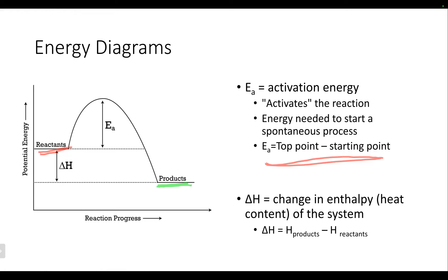Delta H — the change in enthalpy, the change in the heat content of the system — is going to be the enthalpy of the products minus the enthalpy of the reactants. So just that change in energy between where we finished the reaction and where we started it. With the reverse reaction, we would just have to switch the sign on delta H because we're just flipping what we're considering the products and the reactants.